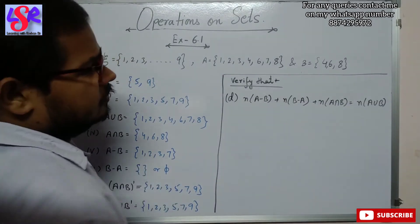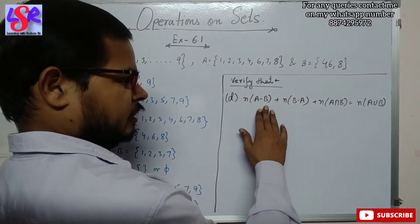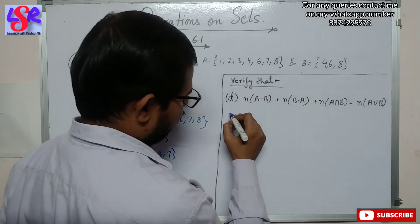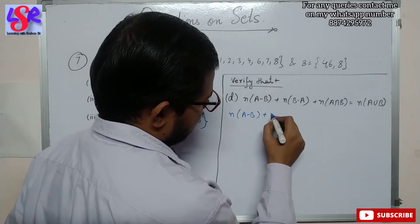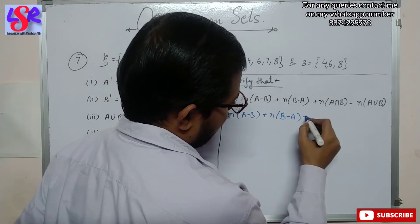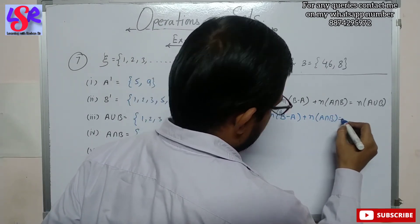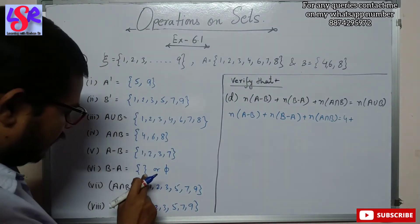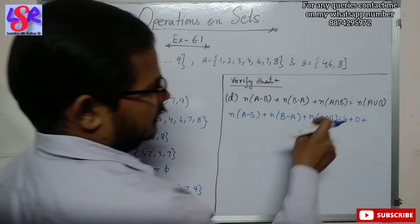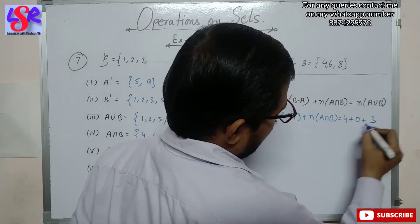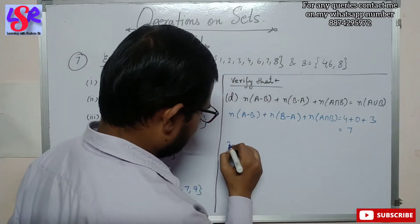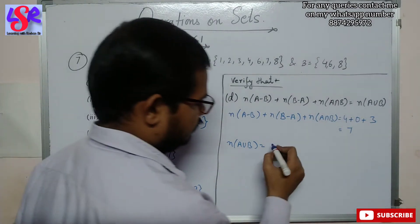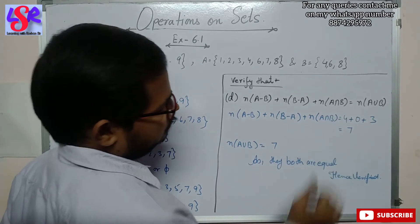In part D we have to prove N(A minus B) plus N(B minus A) plus N(A intersection B) equals N(A union B). N(A minus B) = 4, N(B minus A) = 0, N(A intersection B) = 3, giving 4 + 0 + 3 = 7. N(A union B) = 7. Both equal 7, hence verified.